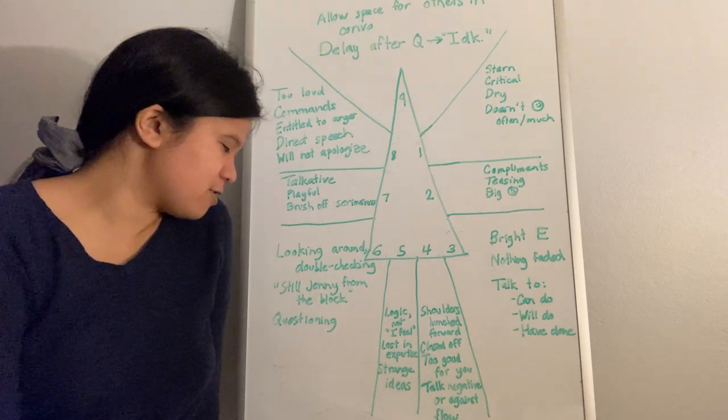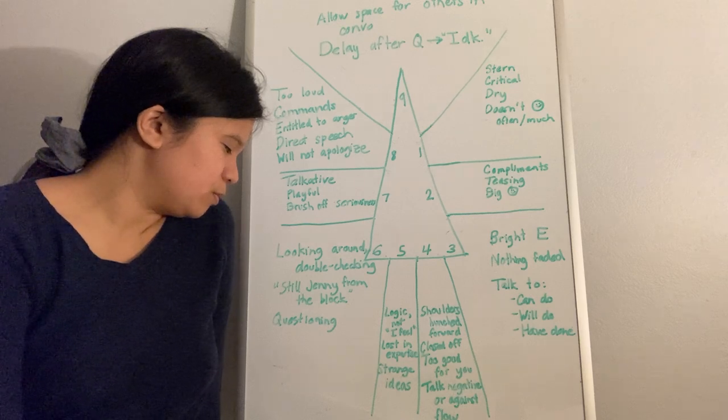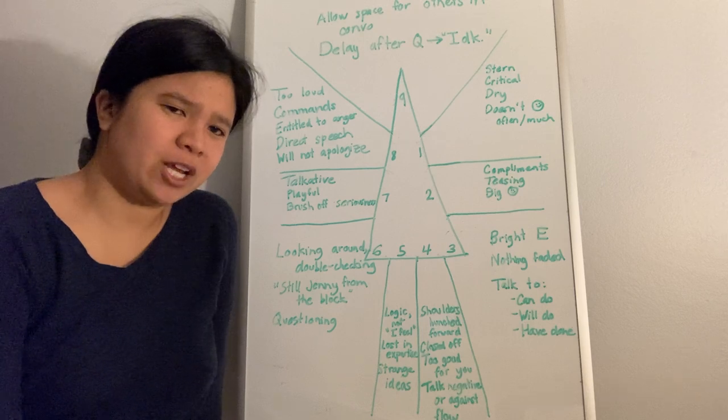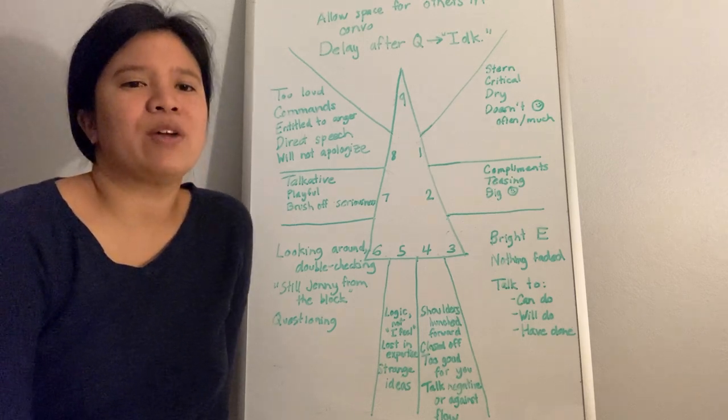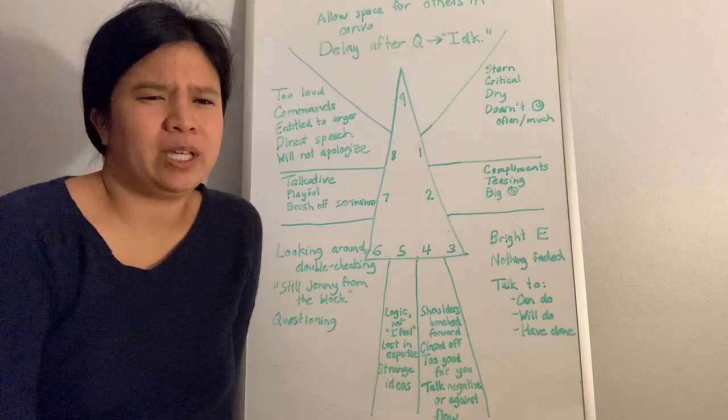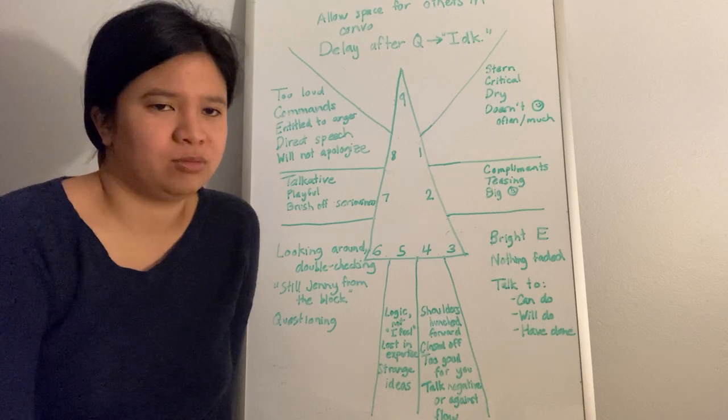And the 6s, having a difficult, conflicted relationship with authority, trying to figure out whether authority can actually be trusted or to be suspicious of authority, you'll find 6s questioning a lot.